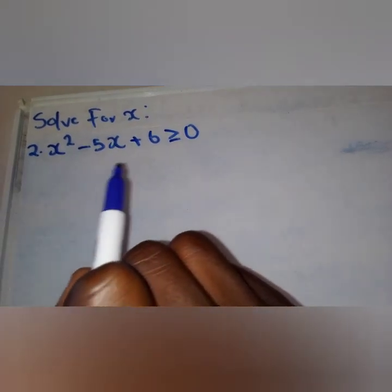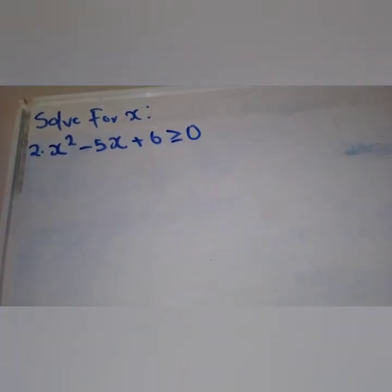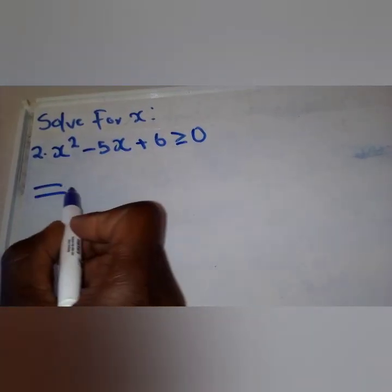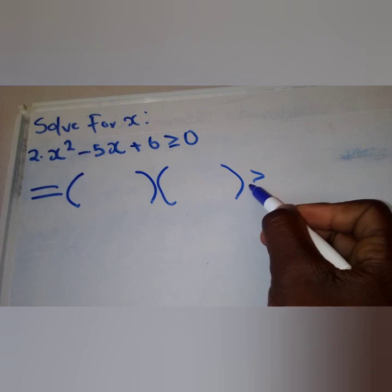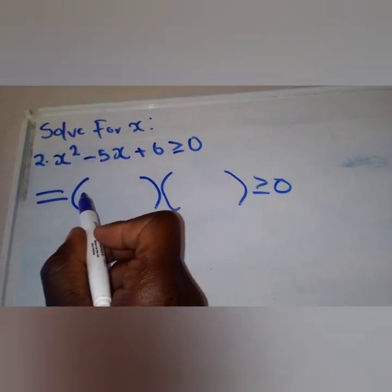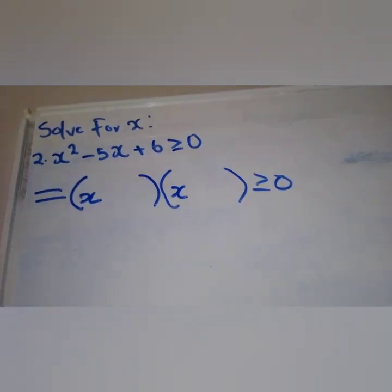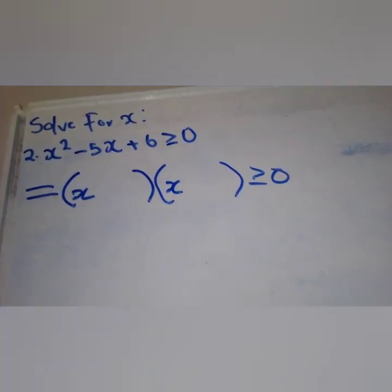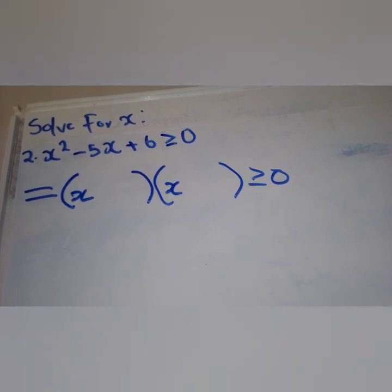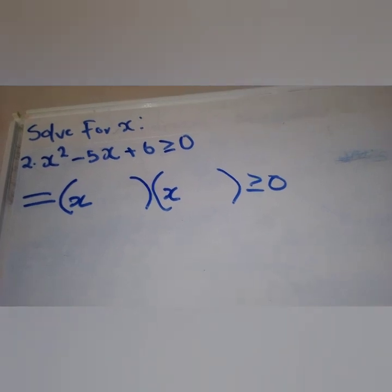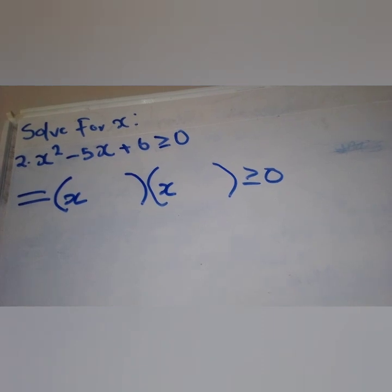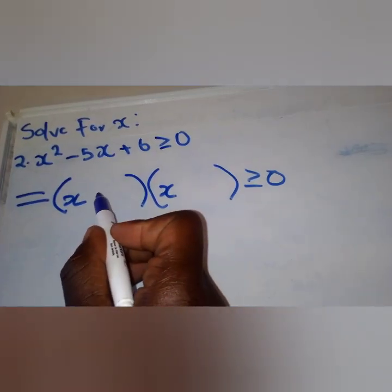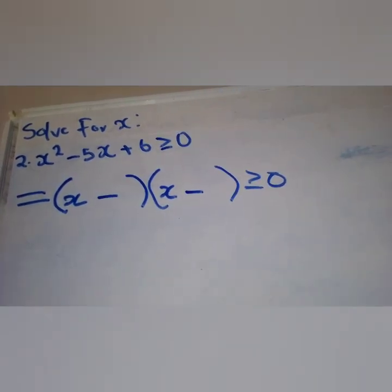Our second example: x squared minus 5x plus 6 is greater than or equal to zero. Everything is already in standard form. We factorize — we have x in each bracket. In a trinomial, when the last term is positive it tells us the signs inside the brackets must be the same, so we take the middle sign, which is negative, and use it in both brackets.